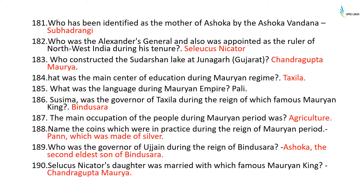The main occupation of people during the Mauryan period was agriculture. The coins in practice during the Mauryan period were Pana, which were made of silver. Seleucus Nicator's daughter was married to Chandragupta Maurya.